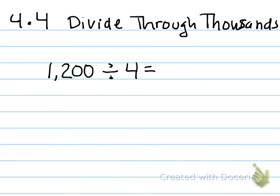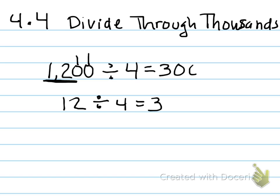Let's move on to Lesson 4.4, dividing through thousands. With these types of problems where you see zeros on the end, look at the greatest place or the greatest 2 places and think of your basic fact. I see the basic fact 12 divided by 4, and I know that equals 3. So 1,200 divided by 4 — 12 divided by 4 is 3, and then how many zeros do I move over? 1, 2.